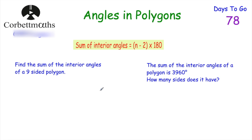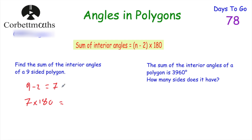Feel free to pause the video and try these questions yourself. The first question says: find the sum of the interior angles of a nine-sided polygon. There are nine sides, so we do 9 − 2 = 7, then 7 × 180 = 1260 degrees. So the angles inside a nine-sided polygon add together to be 1260 degrees.